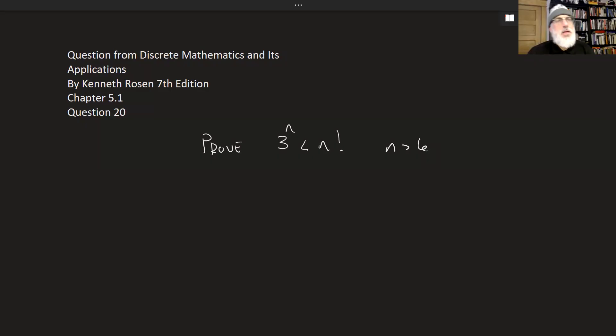Hello. We are doing another induction proof, this time with inequalities. So we are proving that 3 raised to n is less than n factorial for all n's greater than 6. Here n is an integer.